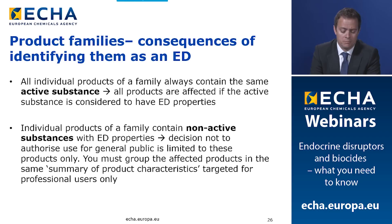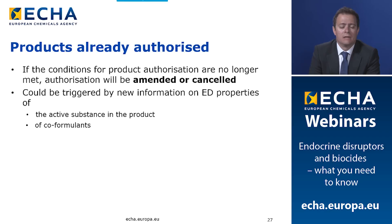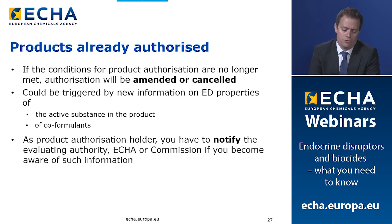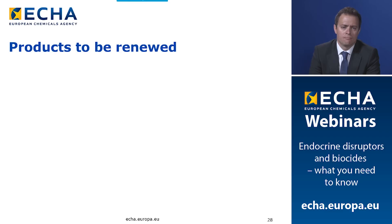For products already authorized: if the conditions for product authorization are no longer met, the authorization will be amended or canceled. This can be triggered by new information regarding the active substance or non-active substances in the product. As a product authorization holder, you have the obligation to notify the evaluating authority, ECHA, or the Commission if you become aware of such information. You will be informed of any action and will be able to submit comments or additional information. The same principles apply to products to be renewed.